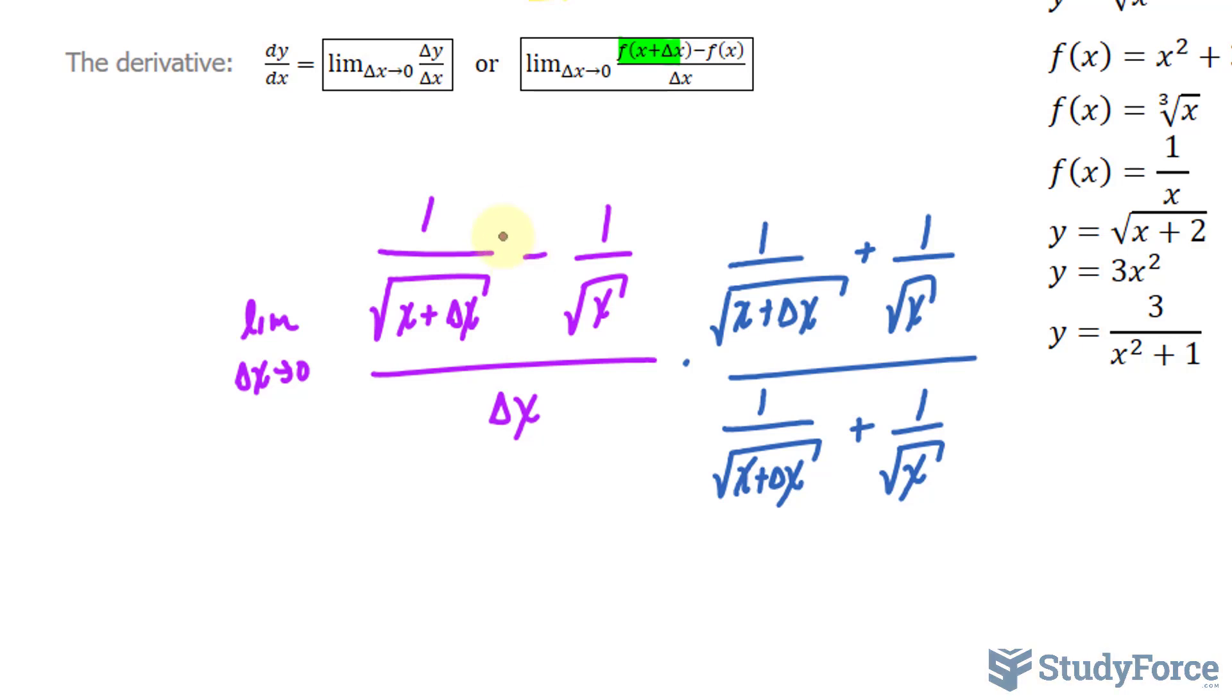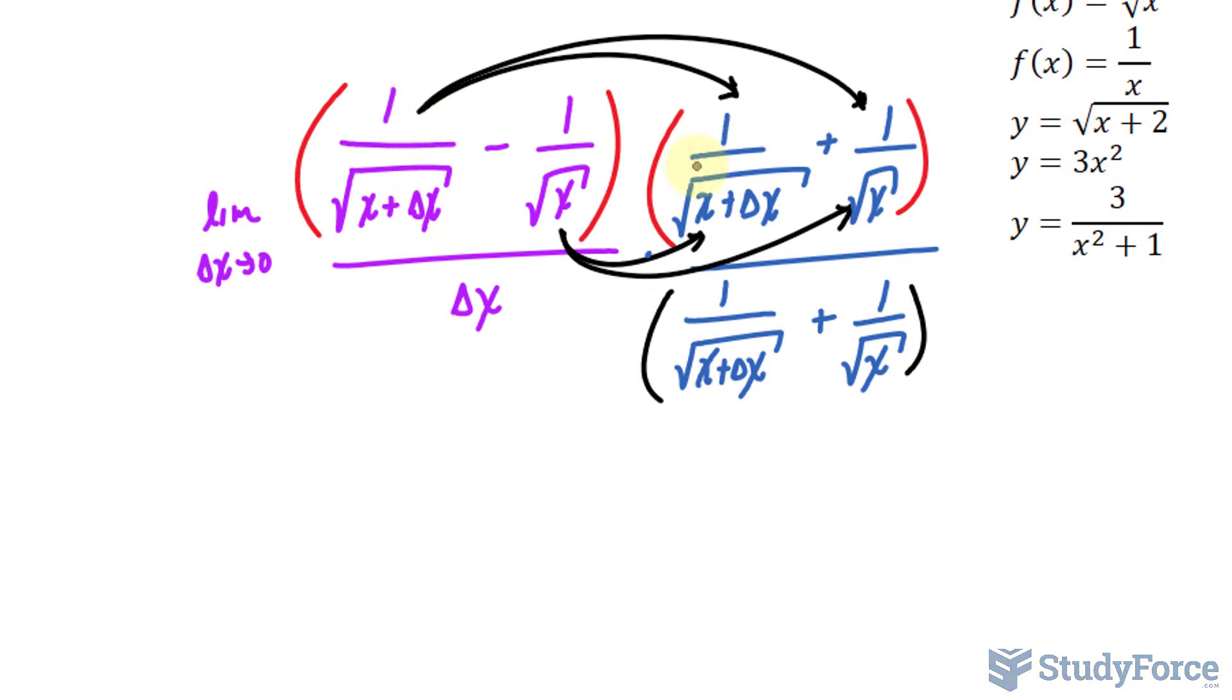And it does an excellent job because at this point, we will now multiply these two binomials. That's a binomial, that's a binomial. And we multiply like this using the distributive law. Starting with this term and that term, when we multiply that term to that term, given that these are the exact same thing and they both have a square root, multiplying them eliminates the square root. So we actually get 1 over x plus delta x.